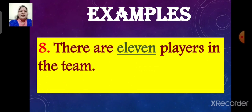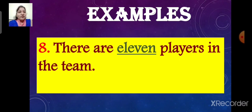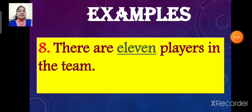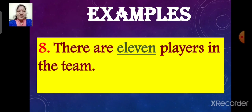There are 11 players in the team. Here, the underlined word is 11. So the word 11 is an adjective. It describes the noun players. It gives information about the number of players in the team. So the word 11 is an adjective of number.